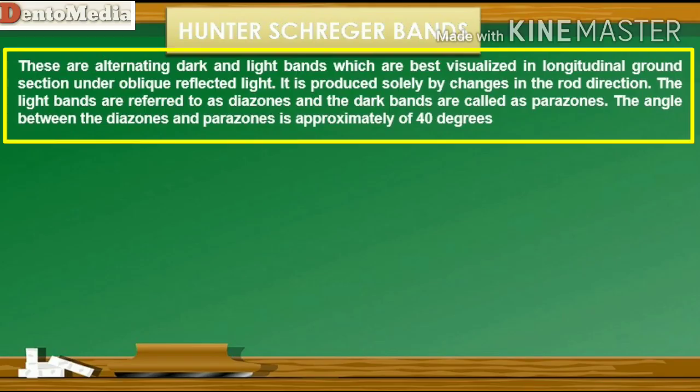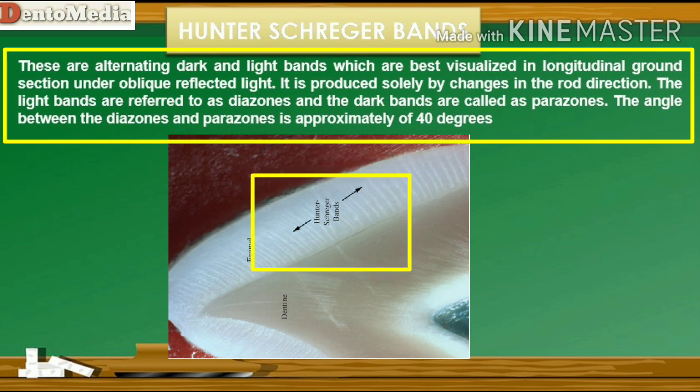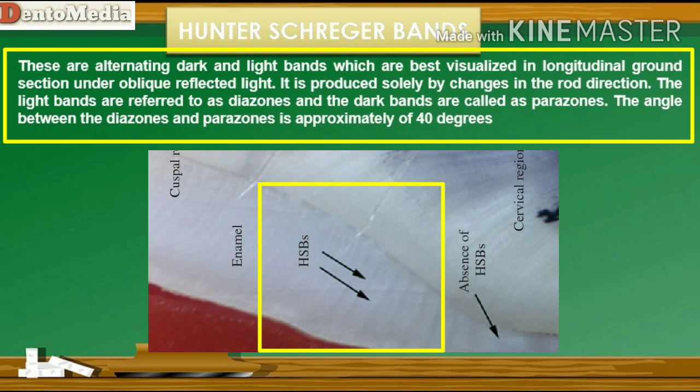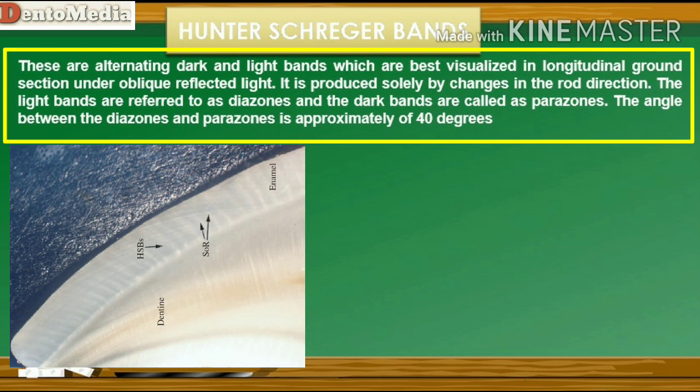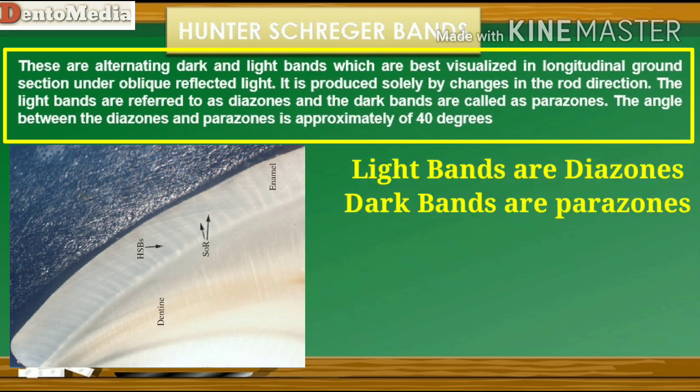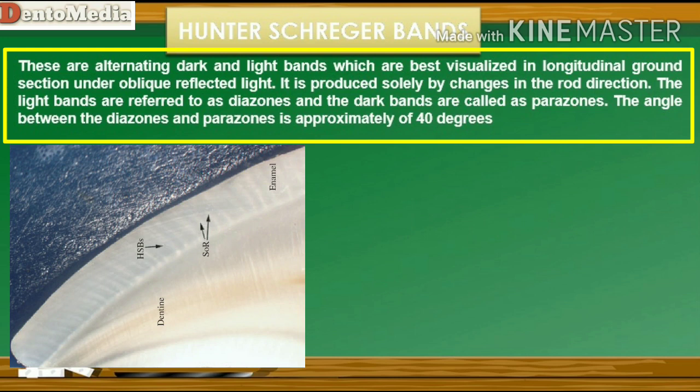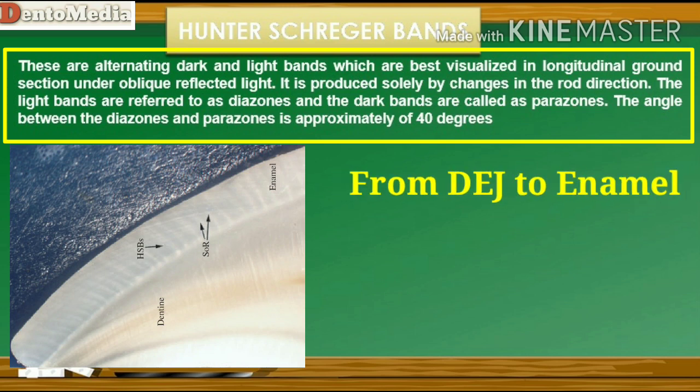Hunter Schreger bands are alternating dark and light bands which are best visualized in longitudinal ground section under oblique reflected light. They are produced solely by changes in the rod direction. They run perpendicular to the striae of Retzius. The light bands are referred to as diazones and the dark bands are called parazones. The angle between the diazones and parazones is approximately 40 degrees. These bands originate at the dentino-enamel border and pass outward, ending at some distance from the outer enamel surface.